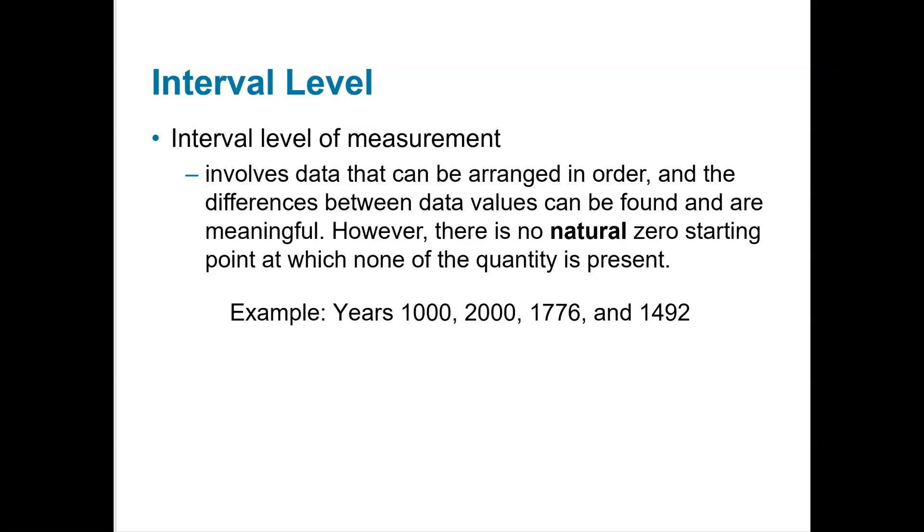Next up is interval. Now interval can be arranged in order, and the differences make sense. So when we subtract these data values, they're meaningful, but the value of zero isn't meaningful because it doesn't mean none of the quantity is present. So it really wouldn't make sense to say that zero year doesn't mean no year. So that would be interval because the zero doesn't really mean nothing. And this will be easier with more examples as well.